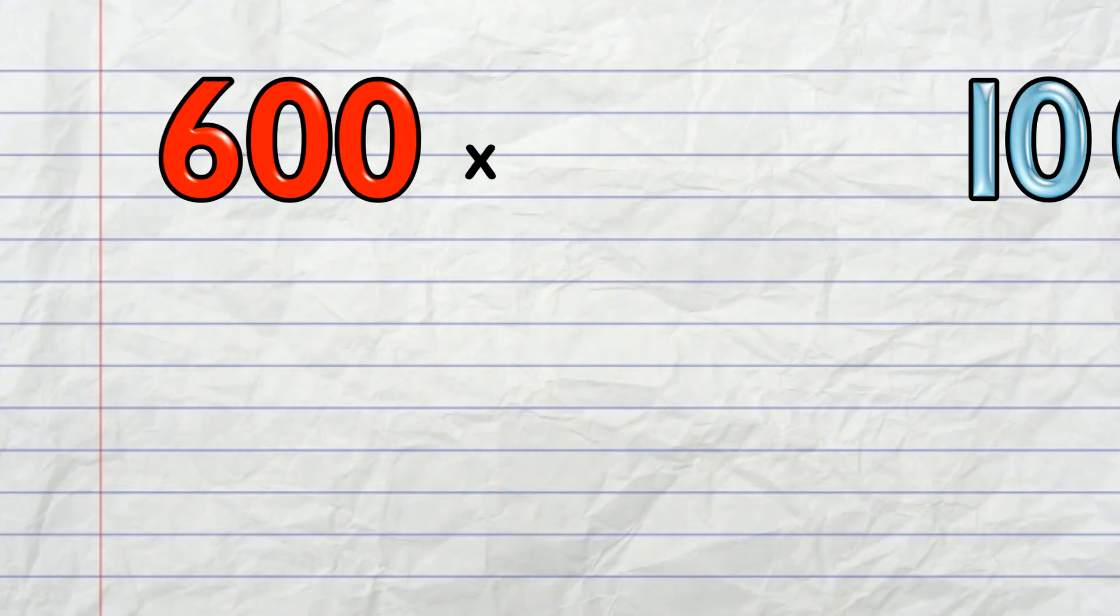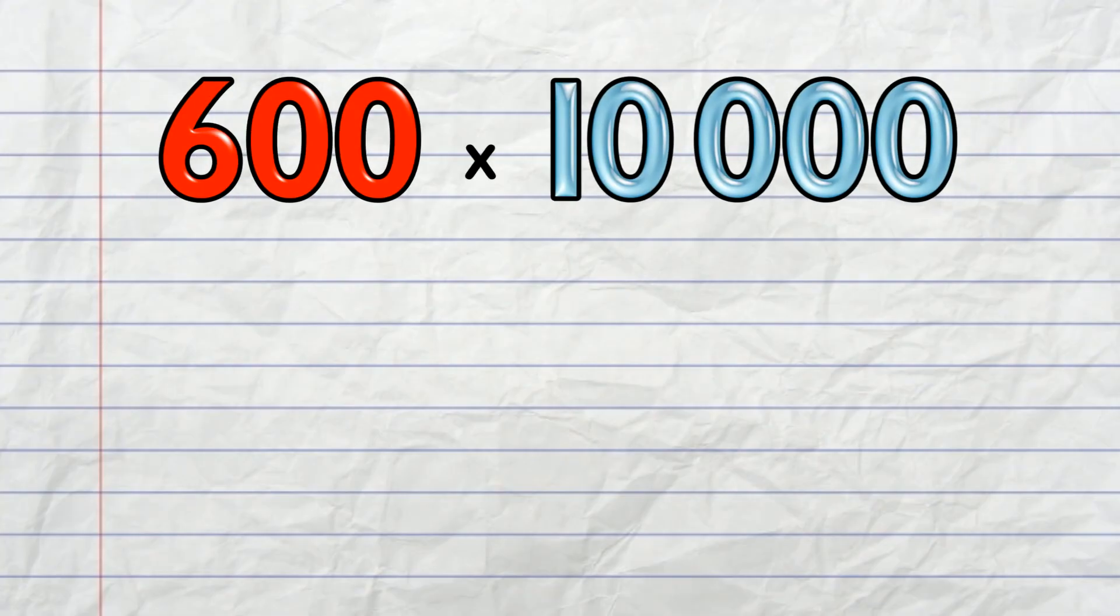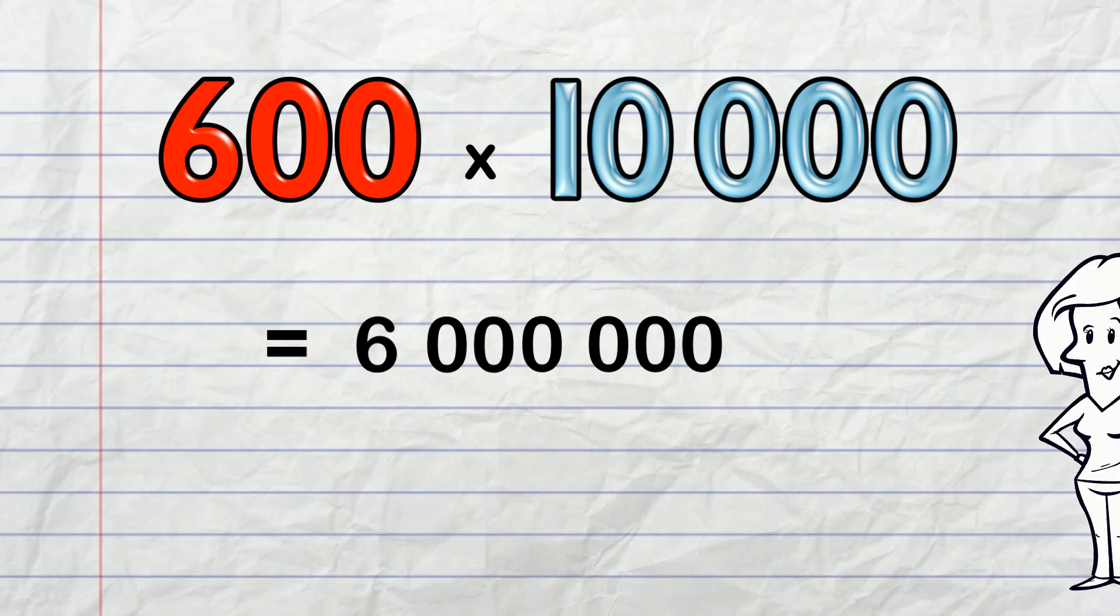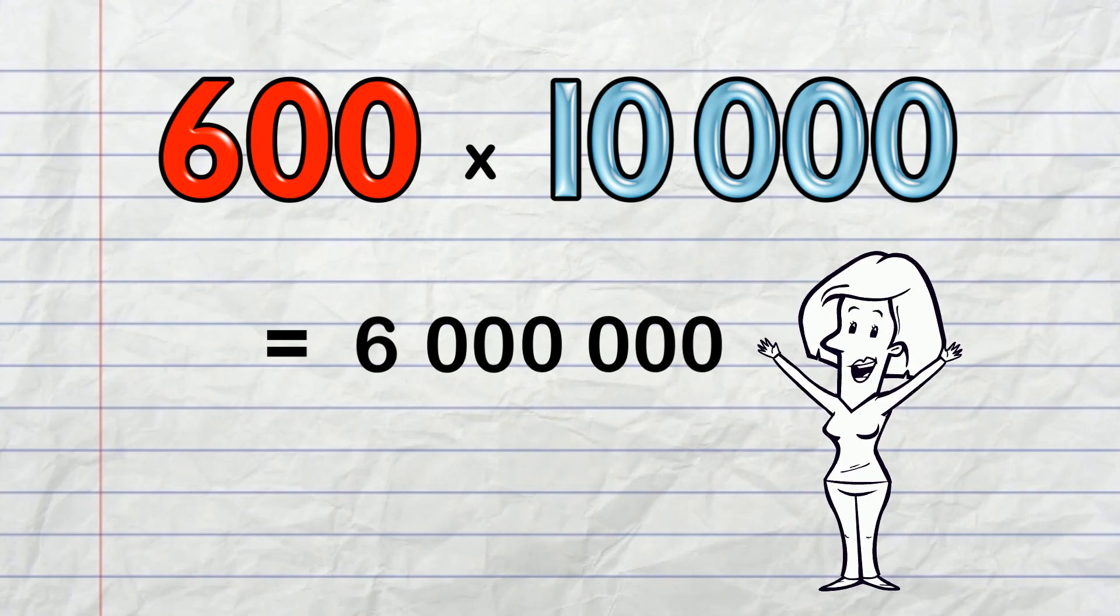Or what about 600 times 10,000? Alright! 6 times 1 is 6, and put in those zeros. We've got 6 of them. That's 6 million!